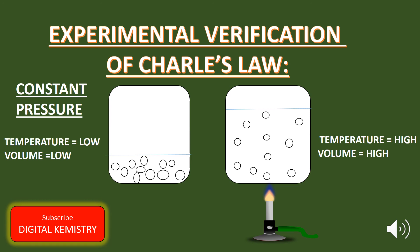Let's talk about the second case — what happens at high temperature? As you can see here in the diagram, when a gas is heated, the kinetic energy of the molecules also increases, which pushes the piston in the upward direction. As a result, the volume of a gas also increases. So due to the increase in the volume, the number of collisions per second with the walls of the container does not change with the temperature. So the pressure of the gas remains constant. Simply put, when the temperature is high, the volume of a gas is also high — meaning the volume and the temperature are directly proportional to each other.